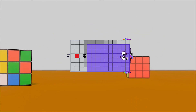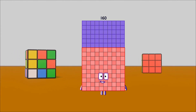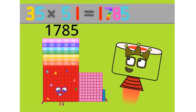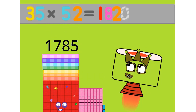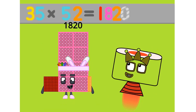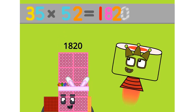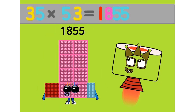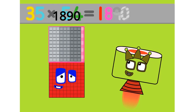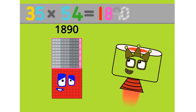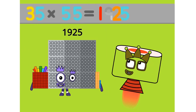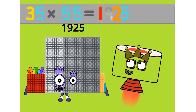35 times 51 equals 1785. 35 times 52 equals 1820. 35 times 53 equals 1855. 35 times 54 equals 1890. 35 times 55 equals 1925.